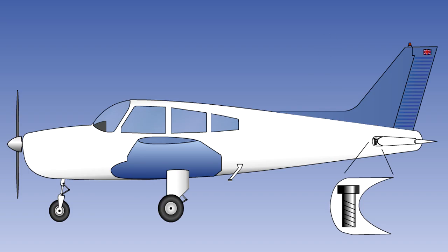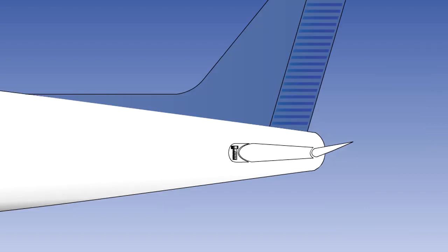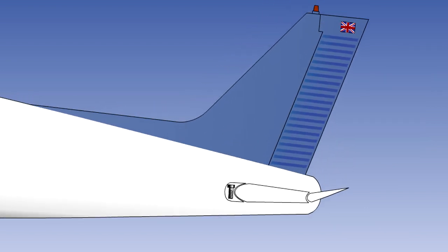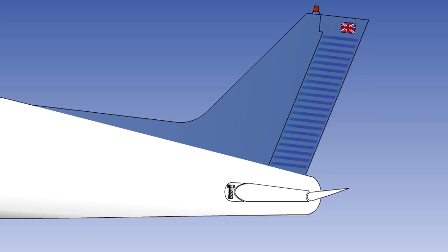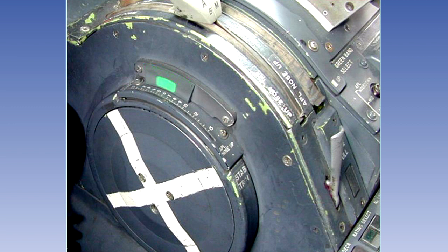An example of the operation of a variable incidence trimming tailplane to achieve trim after a change of attitude is shown in this graphic. The elevator is deflected to change the pitch attitude. The angle of incidence of the tailplane is now altered by the pilot to achieve trim. The amount of trim required will depend on the center of gravity position.